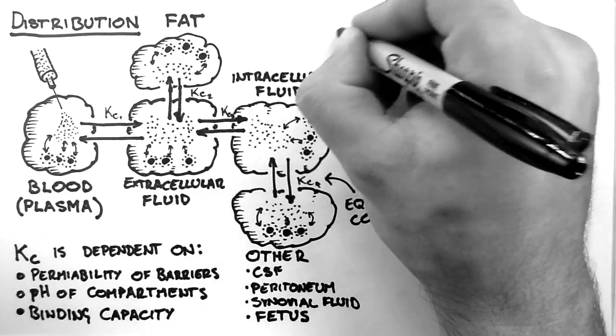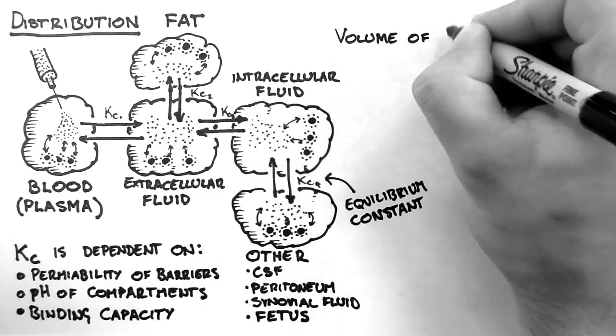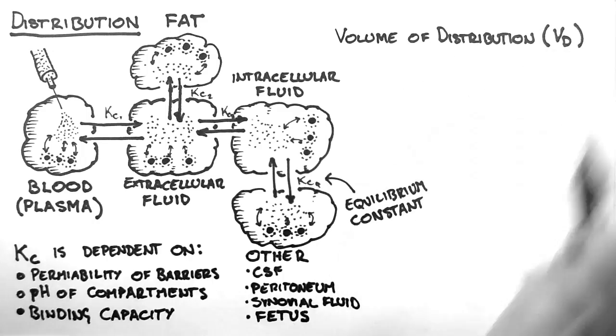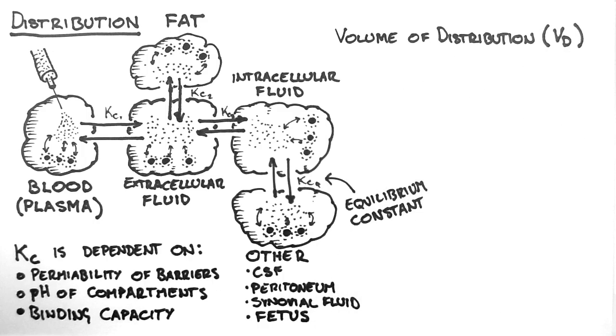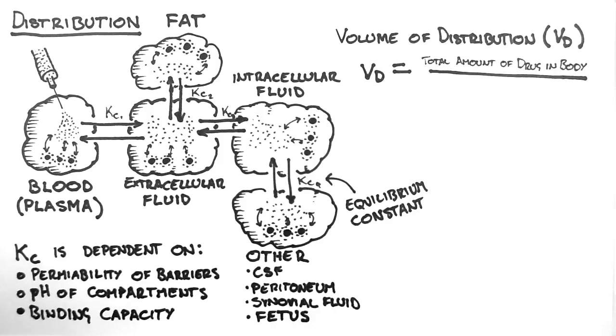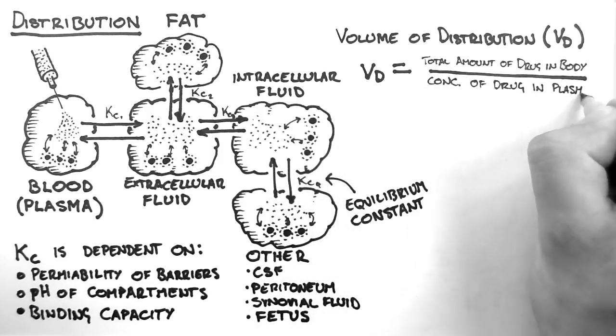Now I'm going to talk about the volume of distribution, which depending on the level of pharmacology you need to know, may or may not be important. The volume of distribution, denoted VD, is a property of the drug which shows how much drug needs to be within the body to get a certain concentration in the plasma. It is defined as the total amount of drug in the body divided by the concentration of drug in the plasma.